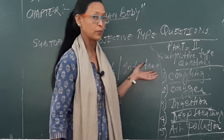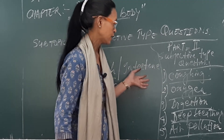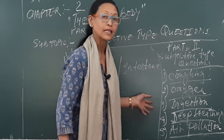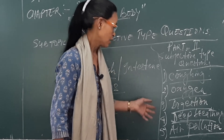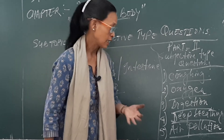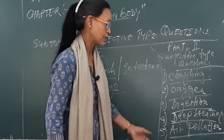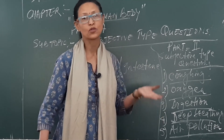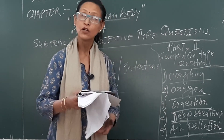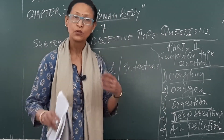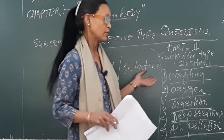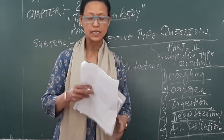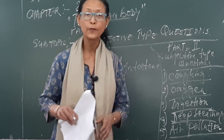So the answers for 'Name the Following' are: number one — coughing; number two — oxygen; number three — digestion; number four — deep breathing; number five — air pollution. You can write this exercise neatly in your copy. That is all for today.